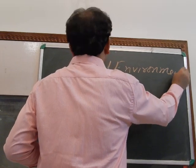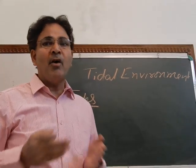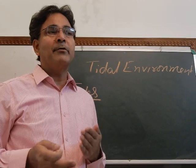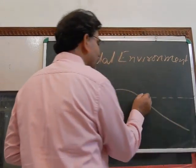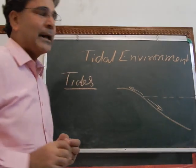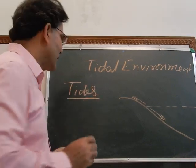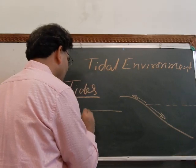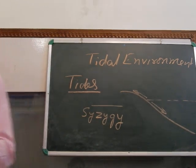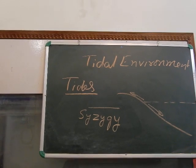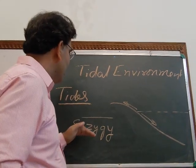We are familiar with the term tides — tides are the rise and fall of sea water because of the gravitational attraction of the moon and sun. The alignment of the sun, moon, and earth in the same straight line is known as syzygy, and this syzygy is very important when all three celestial bodies are in the same straight line.